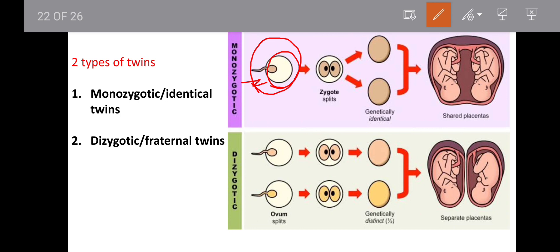This is a fusion — fertilization. Then the zygote divides. One single zygote divides into two different cells. These two cells are genetically identical.